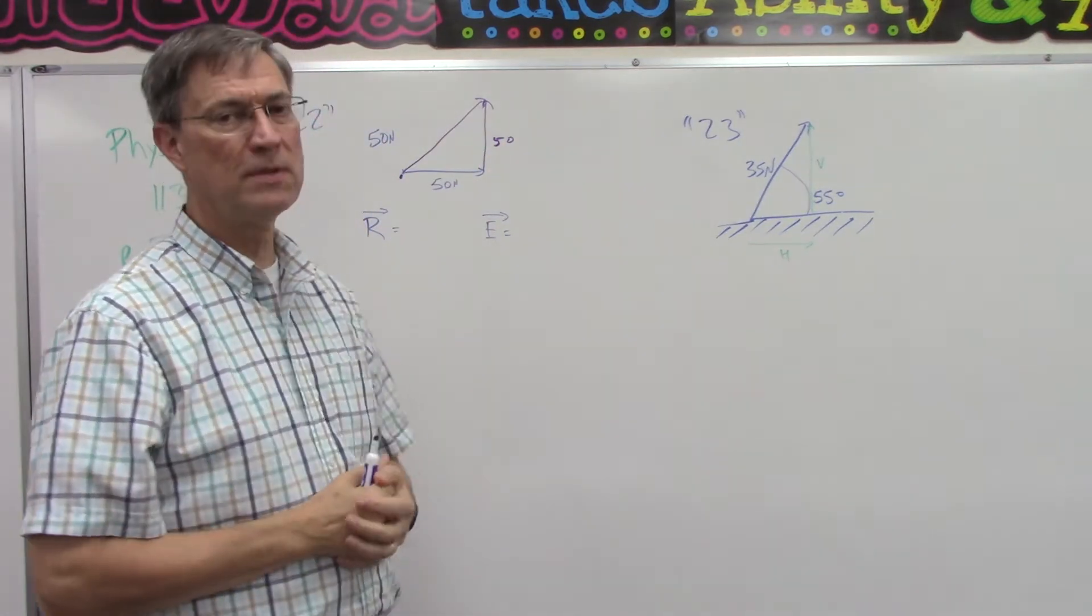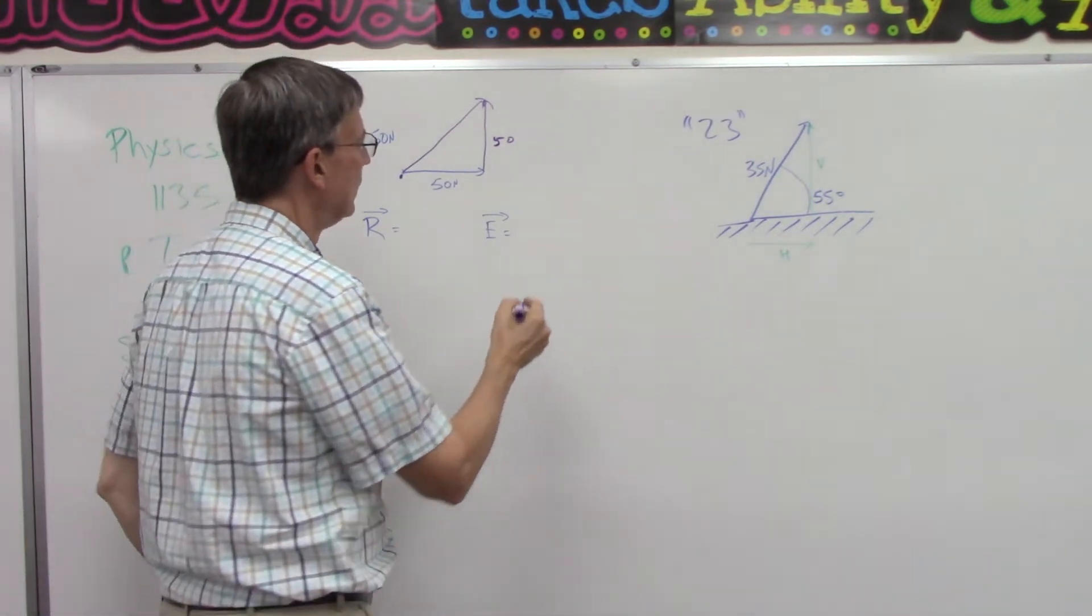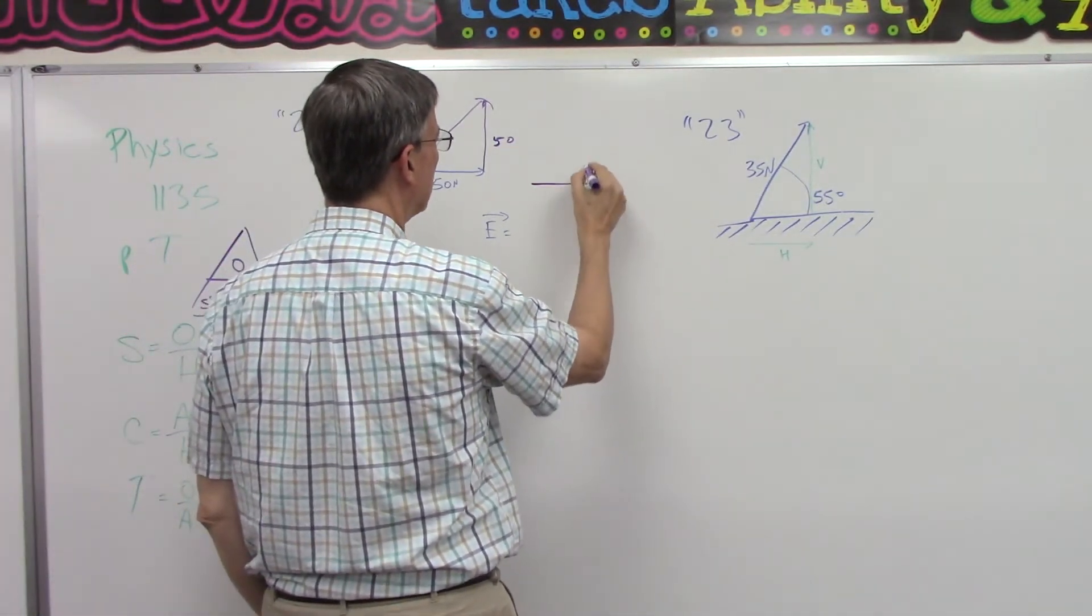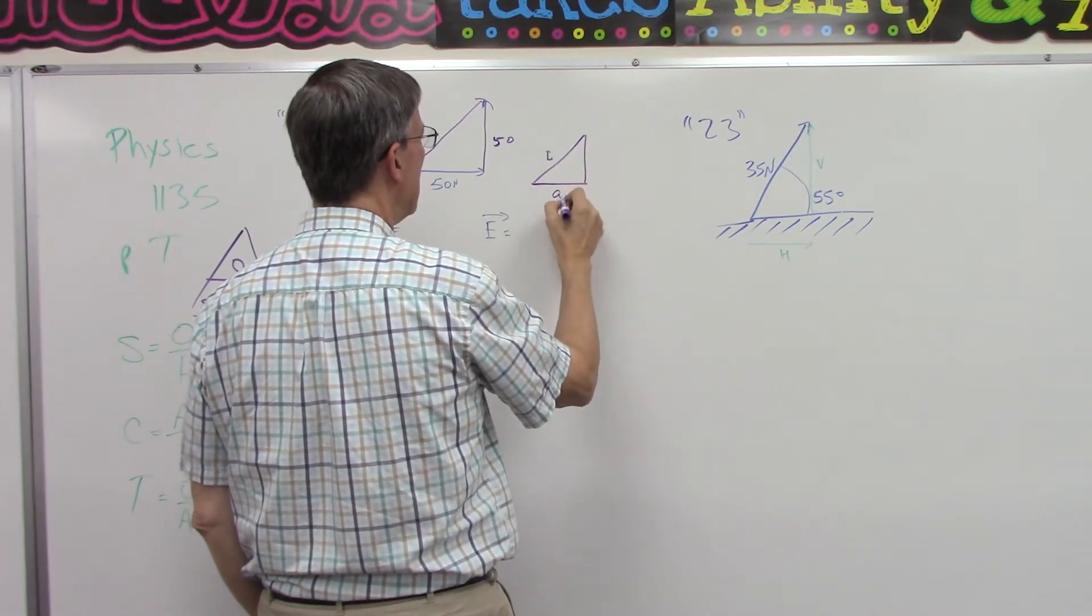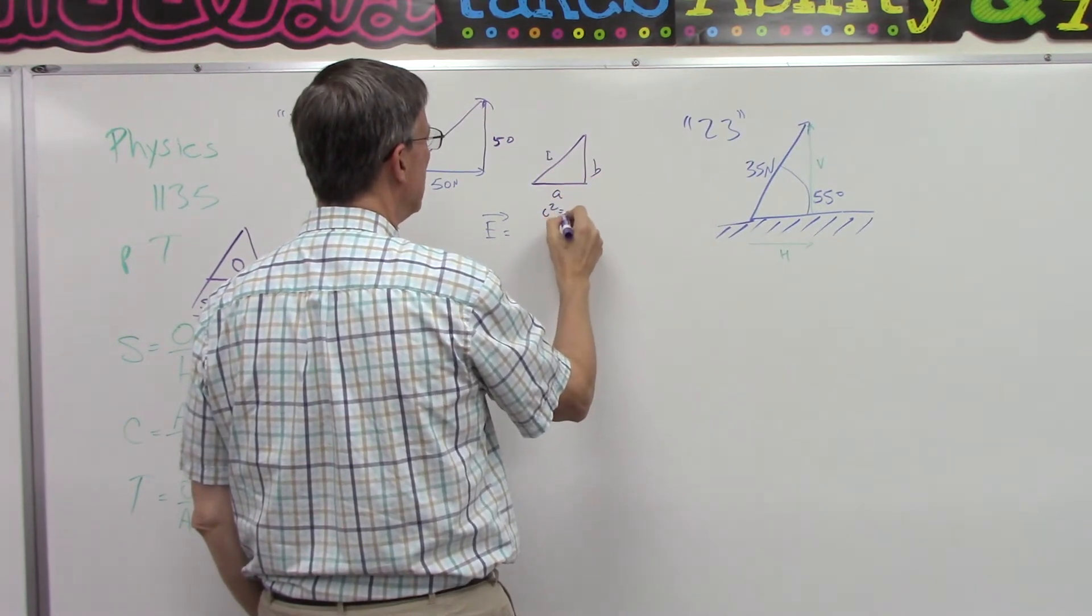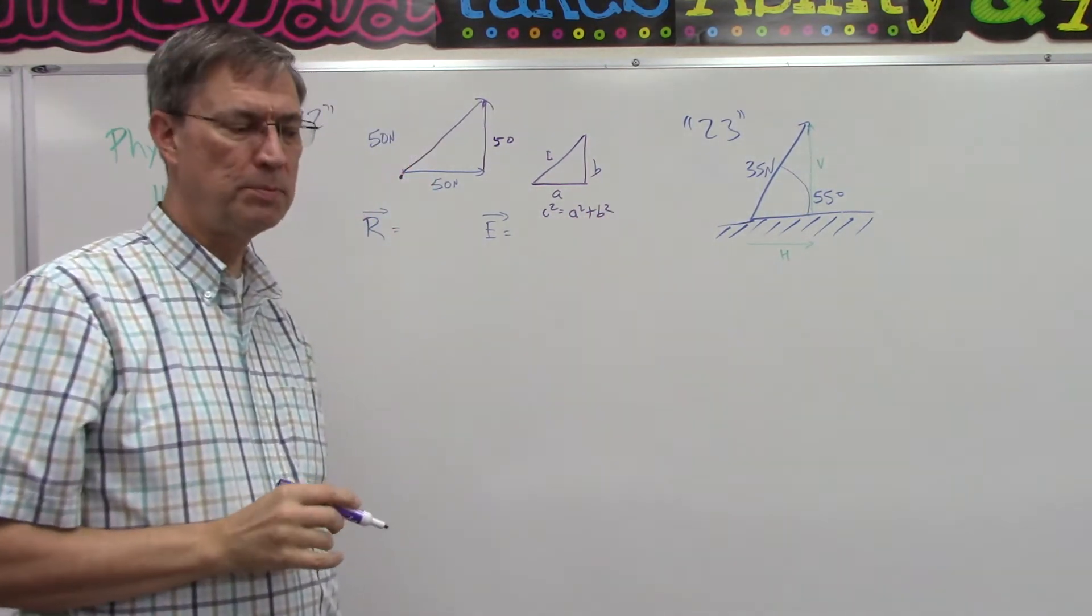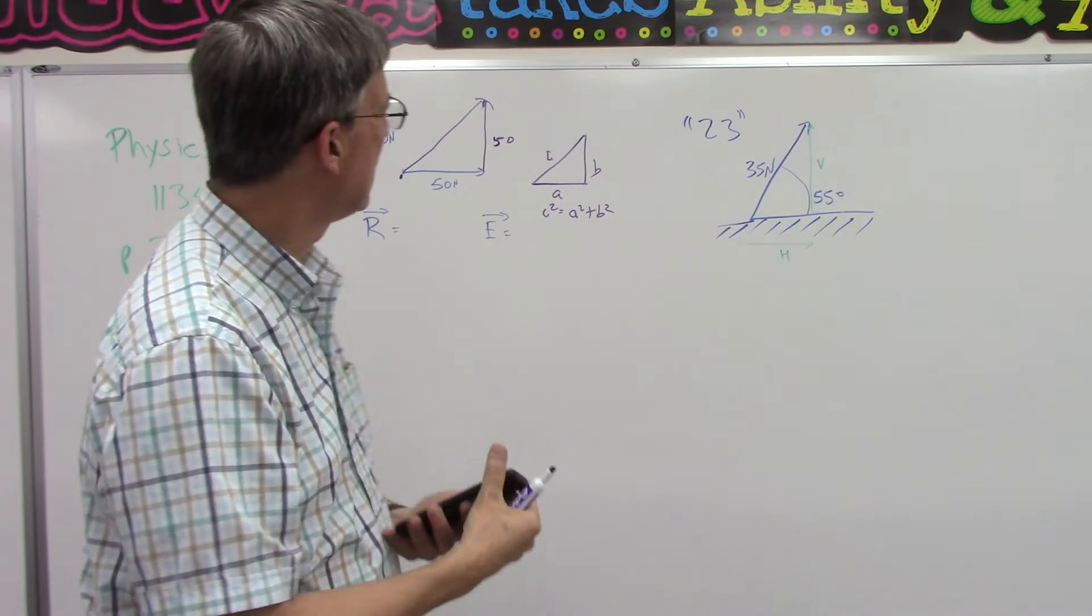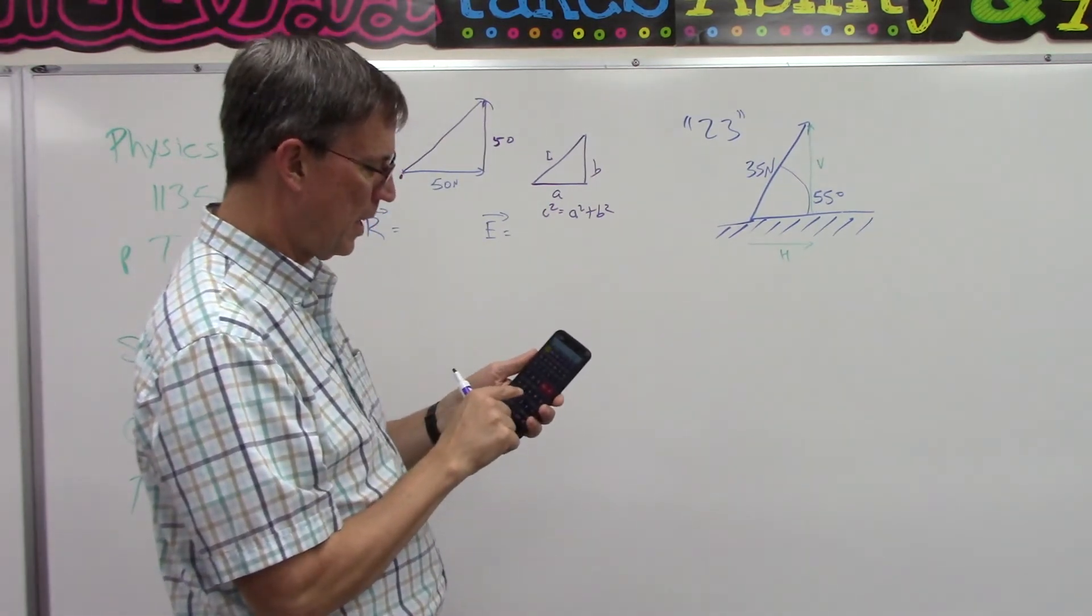So now this is also 50 and this is 50. And we want to find out what is that angle and what is the force pulling in that direction. The easiest is to find that resultant force. So let's remember a little Pythagorean theorem. We always use C, A, and B. And we say that C squared equals A squared plus B squared. So if we take 50, get your calculator, do it times 50.